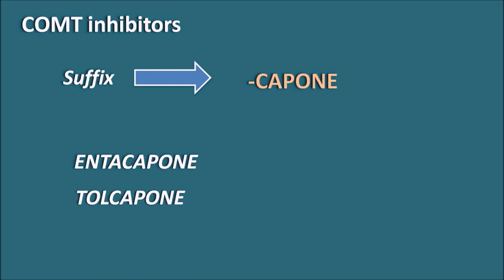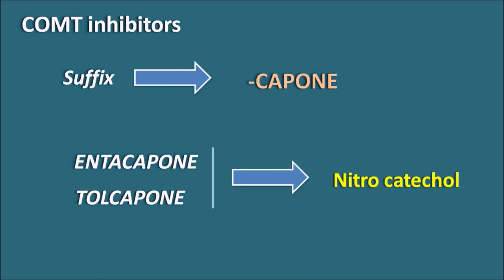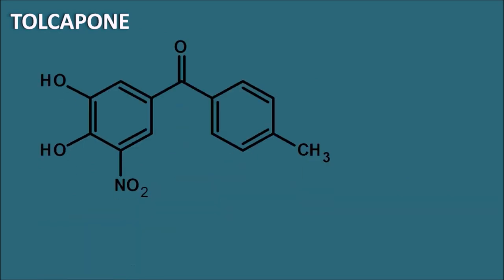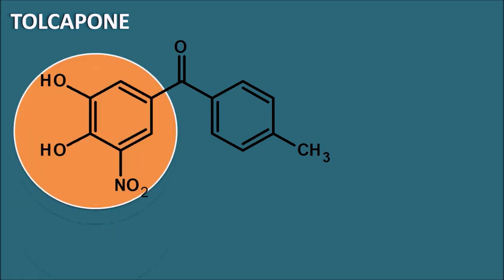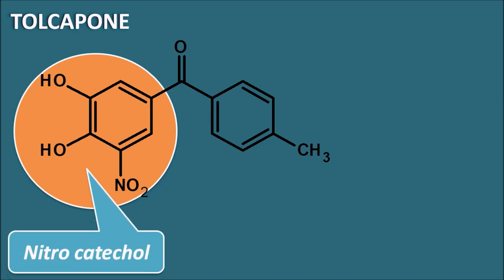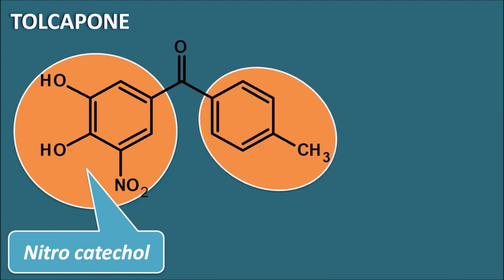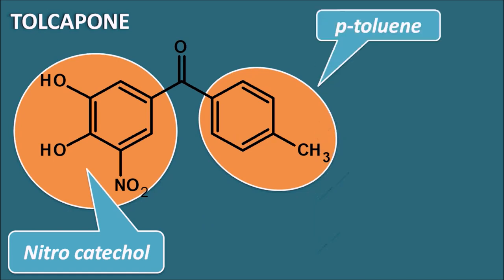These two drugs are chemically belonging to a category of nitrocatechols. Let us start with tolcapone. Tolcapone has the structure with one ring system that is a catechol with a nitro group present — so this is a nitrocatechol. On the other side, it is having a phenyl ring with a methyl group — that means it is having the para-tolyl group. The tolyl group is present as a radical in this structure.